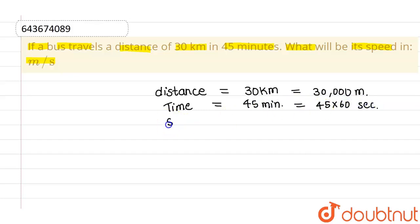And we have to find out the speed. So we know an expression which relates distance, time and speed. This is given by speed equals to distance over time.